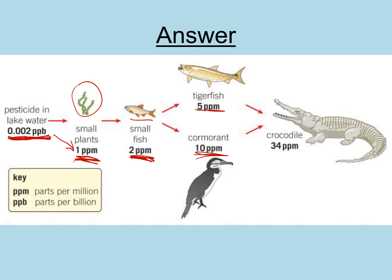If a tiger fish eats three or four small fish, and a cormorant eats five or six, they'll have the pesticide at concentrations of 5 or 10 parts per million in their bodies. These larger animals are then eaten by a crocodile, which eventually has 34 parts per million inside its body. That's quite concentrated and can be enough to make animals ill, infertile, or even kill them — causing disastrous effects on organisms and reducing biodiversity in the area.